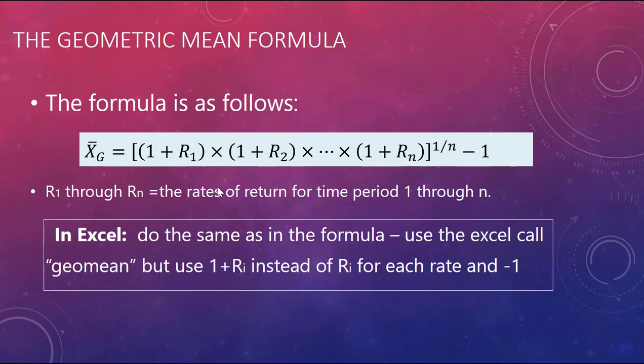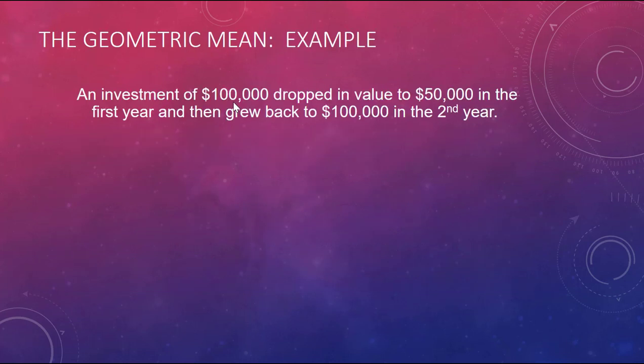Okay, and either is great, either to do the GeoMean or to use the formula here, whichever one you prefer. Let's look at an example. Say we started with $100,000. It dropped in value to $50,000 in the first year, and then it grew back to $100,000 again. So we're a little relieved at the end of our second year of this investment. We're back to where we started.